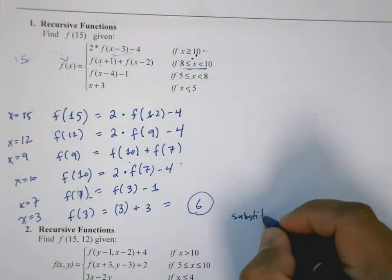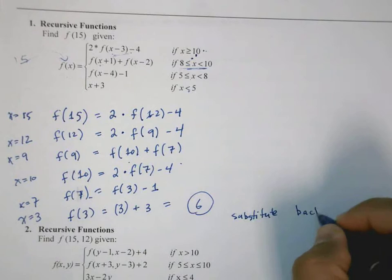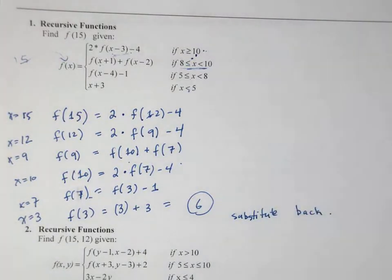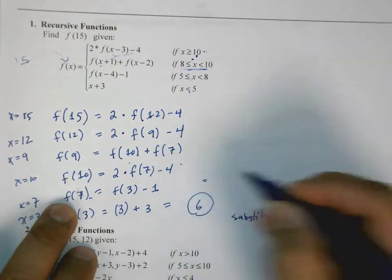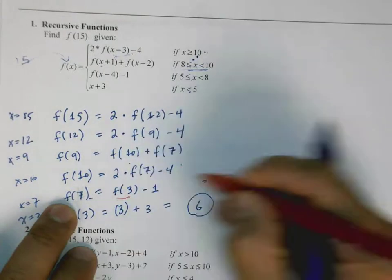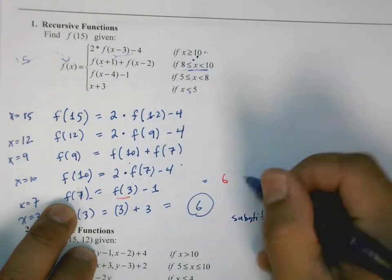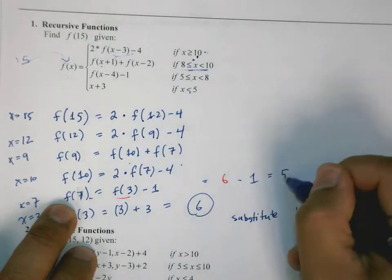Substitute back. And coming back up to here, f of 7, this is equal to f of 3, which is 6, minus 1, which is 5. Back to this right here,